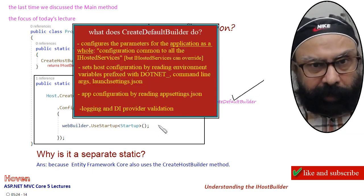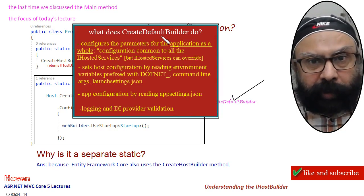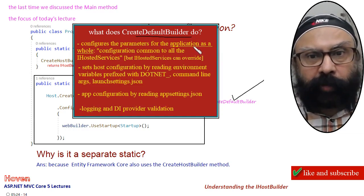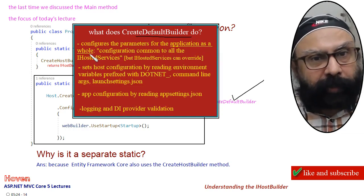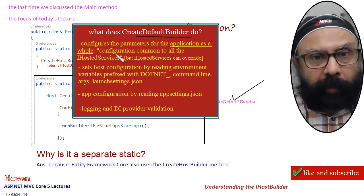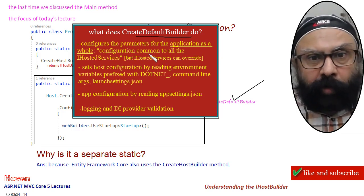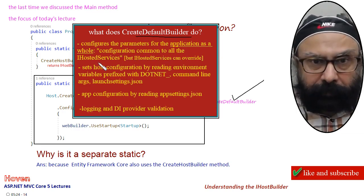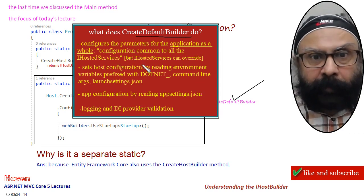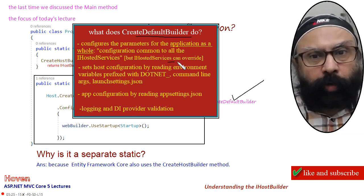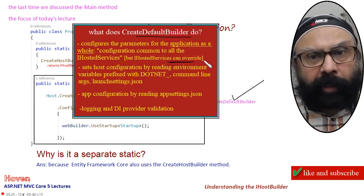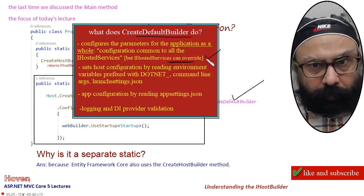The role of the createDefaultBuilder method — very briefly, what does createDefaultBuilder do? It configures the parameters for the application as a whole. That is, configuration common to all the iHosted services. But iHosted services can override and fine-tune that configuration. Second, it sets the host configuration by reading environment variables that start with DOTNET underscore. So any environment variable that by convention starts with DOTNET_ — for example, a variable named DOTNET_ENVIRONMENT — if defined on the machine, will give the environment property.